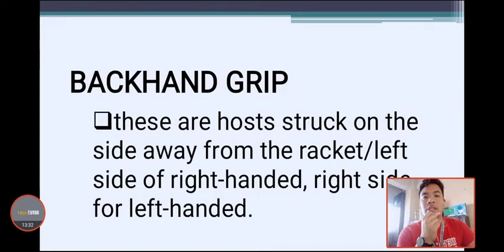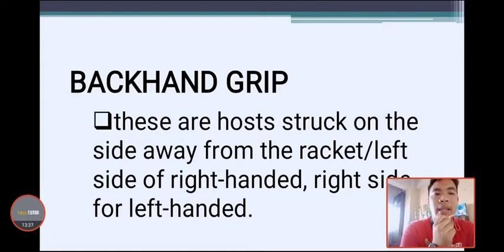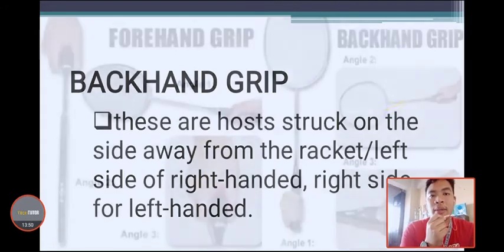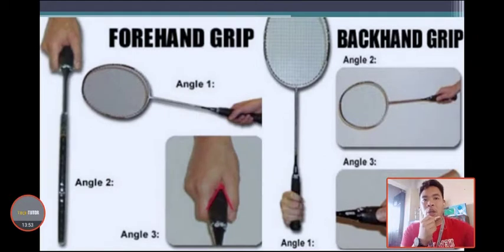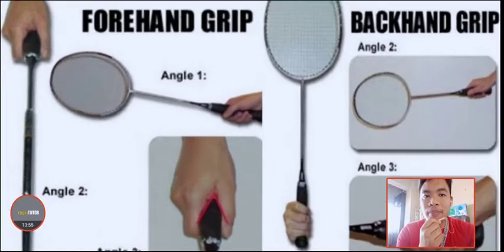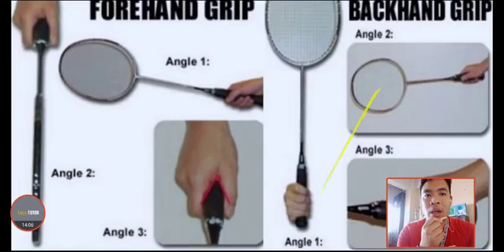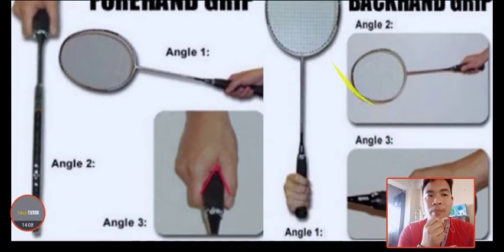The backhand grip refers to shots struck on the side away from the racket — the right side for right-handed players, the left side for left-handed players. Beginners who are not used to either left or right-handed play may find the backhand grip more difficult.